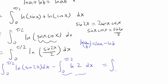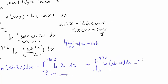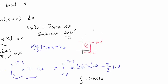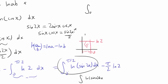So we have: integral from 0 to π/2 of ln(sin 2x) dx, and then this second part — ln(2) is a constant function, so integrating it from 0 to π/2 gives a rectangle with height ln(2) and width π/2, which equals (π/2)·ln(2). Now we need to handle integral from 0 to π/2 of ln(sin 2x) dx. We want to write it in a form that looks like our original expression, ln(sin x) dx. Let's make the substitution u = 2x.